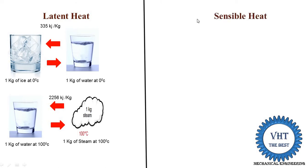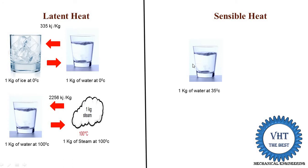Sensible heat means there is a change in temperature but there is no phase change. In latent heat, there is no change in temperature but a phase change takes place. In sensible heat, the opposite occurs — the phase does not change but only the temperature changes.